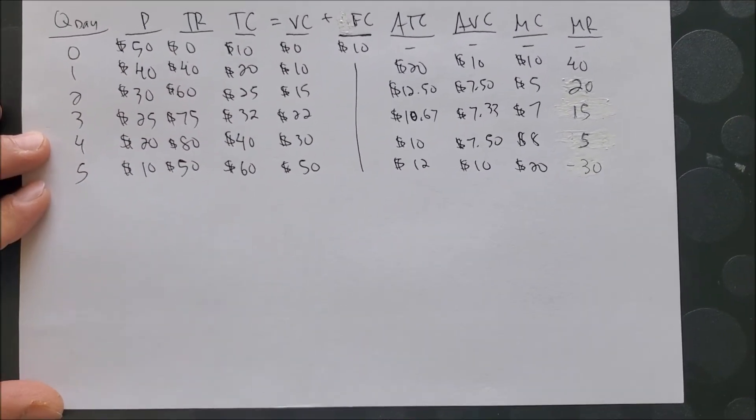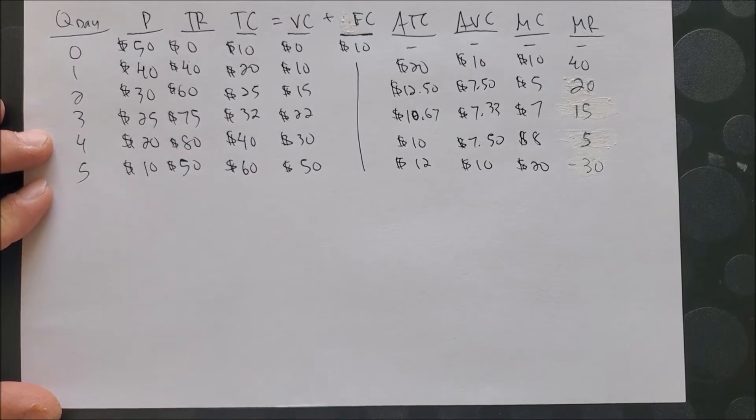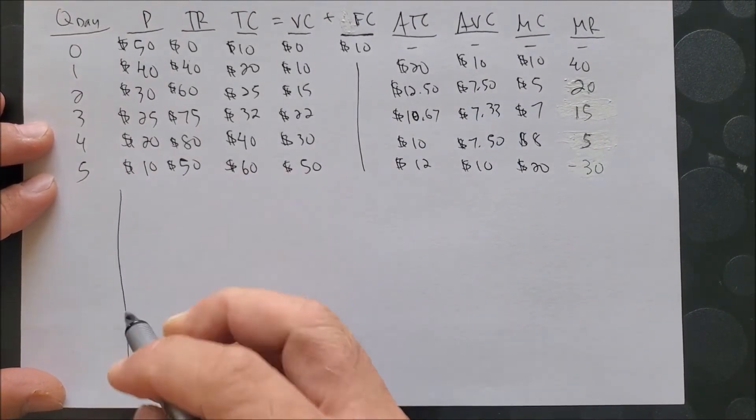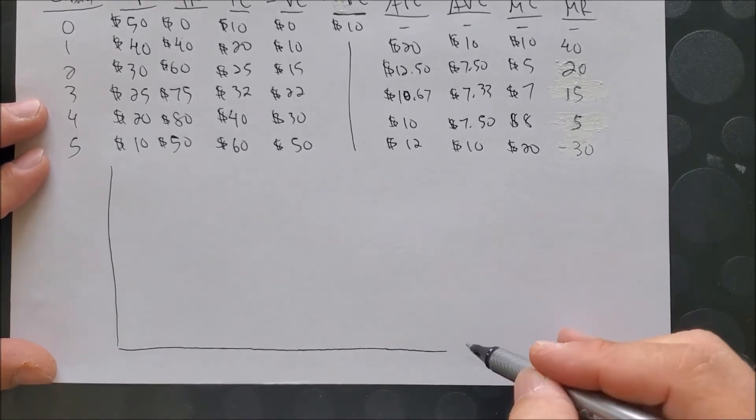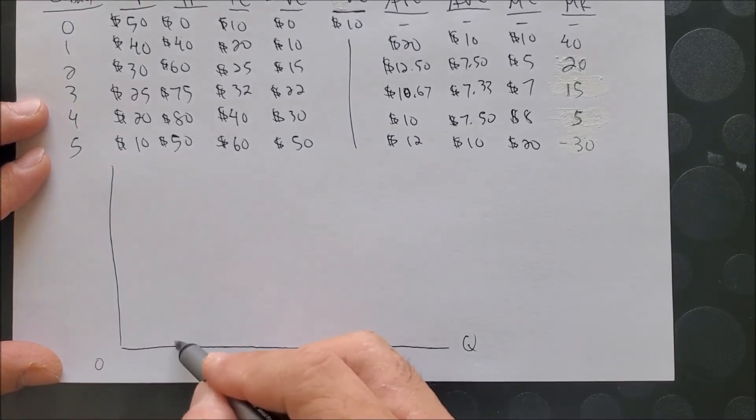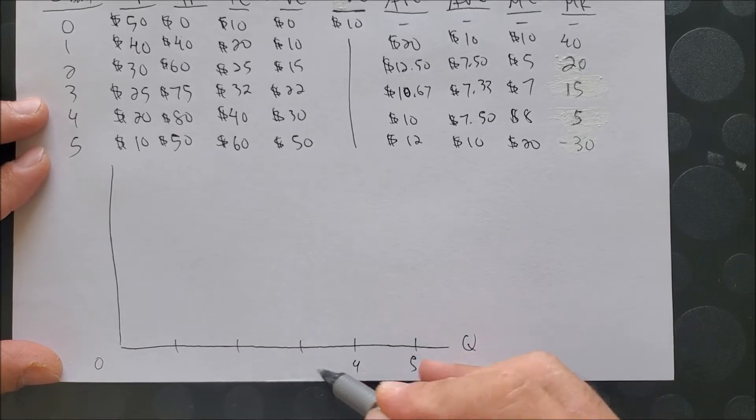Alright, so now we can graph the ATC, AVC, MC, MR, and price in a monopoly market. You're going to draw the graph where we have on the x-axis the quantity, in this case of vehicles being washed: one vehicle, two, three, four, and five vehicles.